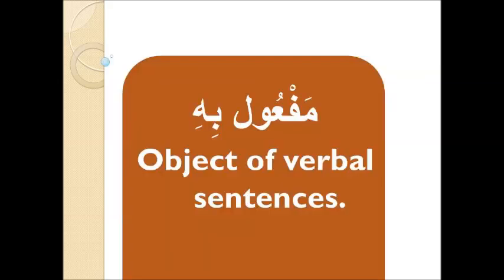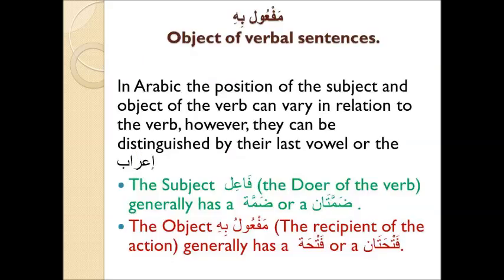مفعول به — the Object of Verbal Sentences. In Arabic, the position of the subject and object of the verb can vary in relation to the verb; however, they can be distinguished by their last vowel, or the إعراب. The subject, فاعل, the doer of the verb, generally has الضمّة or ضمّتان, and the object, or مفعول به, the recipient of the action, generally has الفتحة or فتحتان.